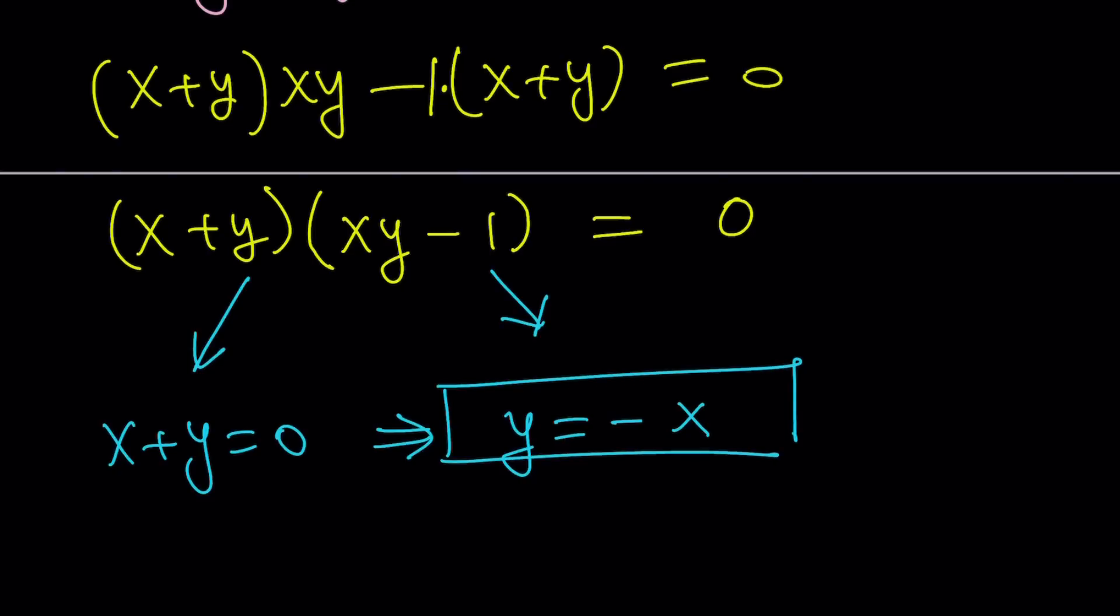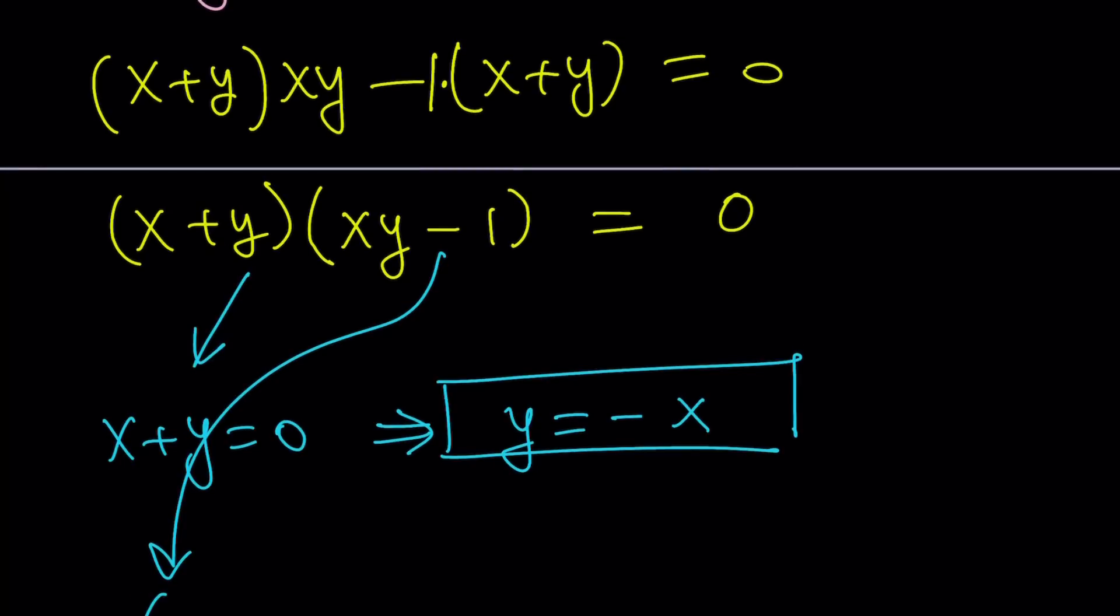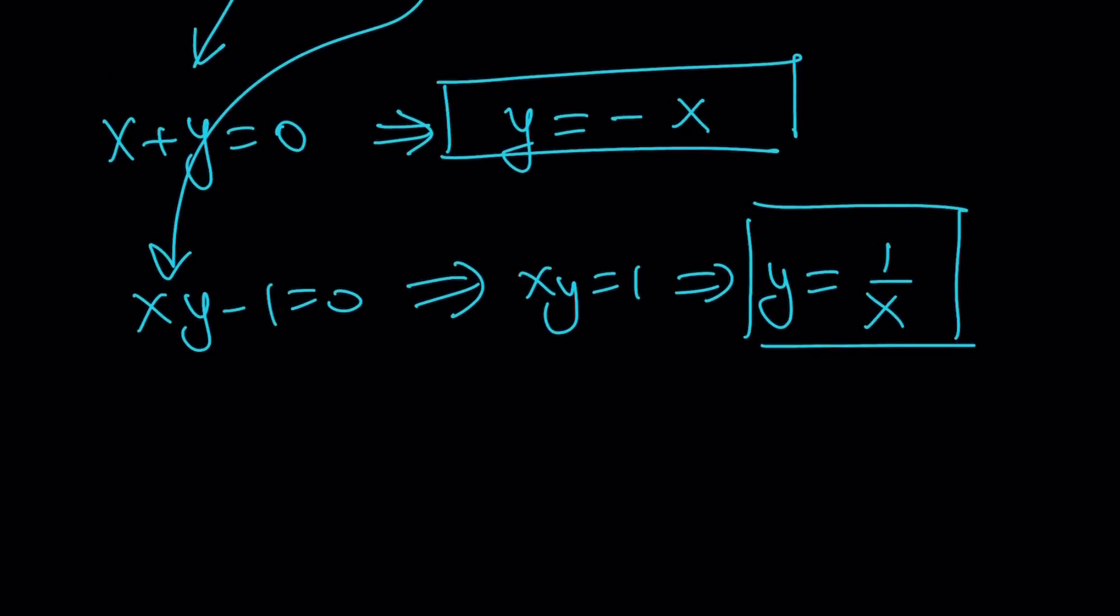This first one gives us x + y = 0, and if you solve for y in terms of x, you get y = -x. Guess what that's going to be? That's going to be a line. What about the second one? That gives us xy - 1 = 0, so xy = 1. From that, I can write this as y = 1/x. And what is that? That is a hyperbola.